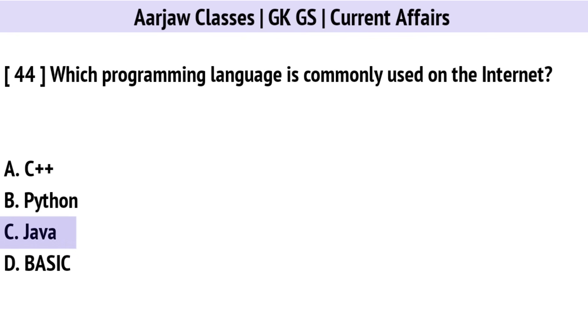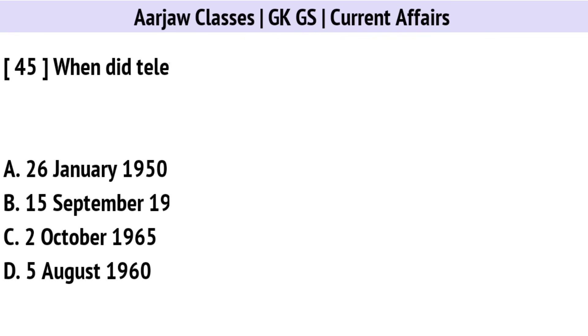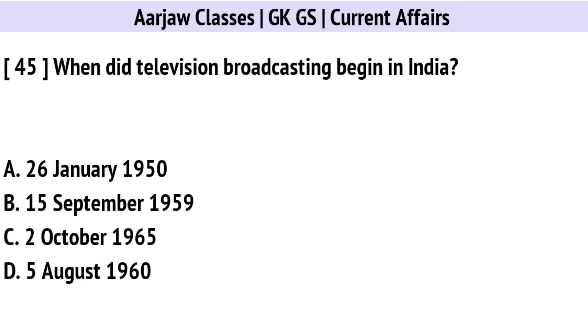Which programming language is commonly used on the internet? The correct option is C: Java.